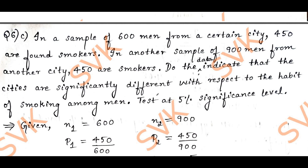At 5% level of significance, the critical value is 1.96. If you get a value less than 1.96, we say it is accepted. If it is greater than 1.96, we say it is rejected. Here also, I need to find the value of z.